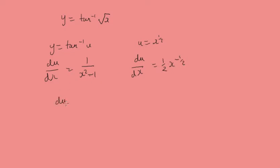So, dy by dx will be 1 over the square root of x squared plus 1 multiplied by a half x to the minus a half.